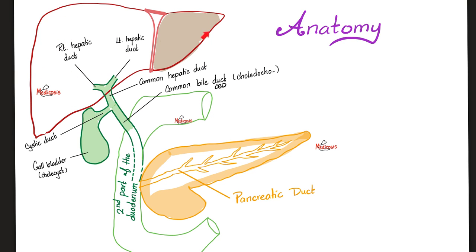Here is your liver: right hepatic lobe, left hepatic lobe. Each lobe has a duct — right hepatic duct and left hepatic duct. When the two hepatic ducts join each other, they make the common hepatic duct. This common hepatic duct is going to join with the cystic duct. The cystic duct is the duct — the bottleneck — of the gallbladder, where you store the excessive amount of bile. When the cystic duct joins the common hepatic duct, they form the common bile duct, or CBD.